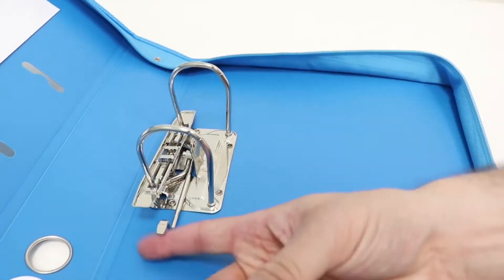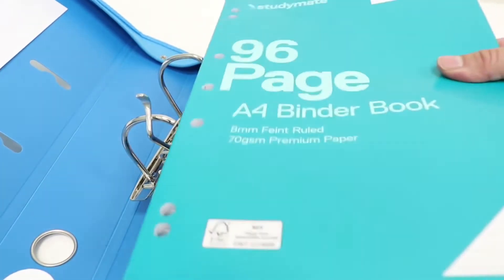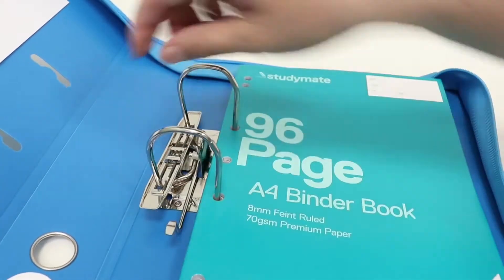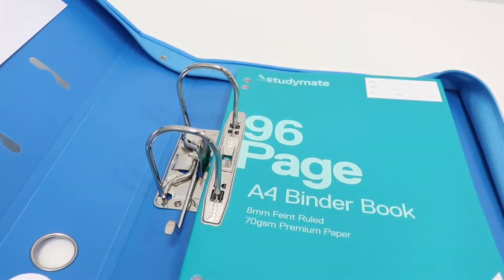The 70mm lever arch mechanism can hold up to 375 sheets of paper and allows you to lock them in place, so there's less chance of damage on the go.